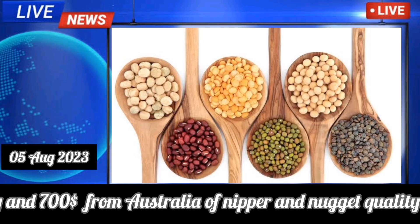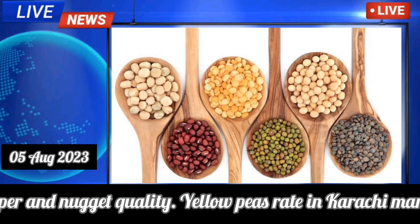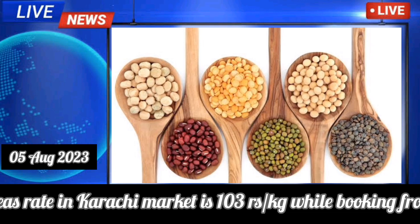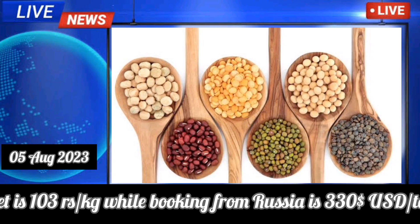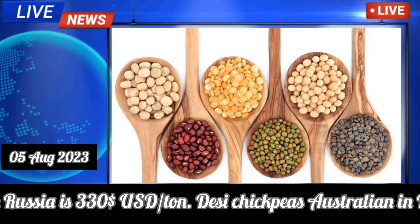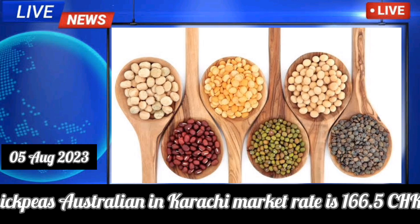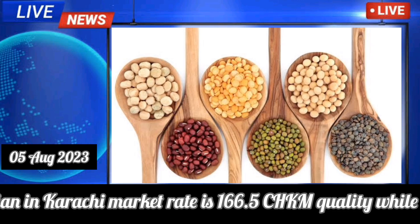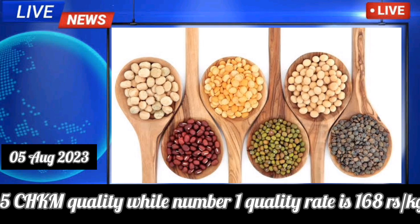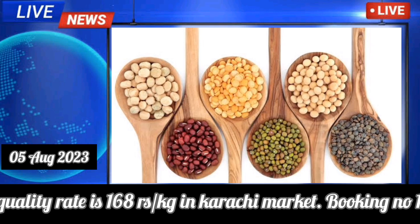Yellow peas rate in Karachi market is 103 rupees per kilogram, while booking from Russia is 330 USD per ton. AC chickpeas Australian in Karachi market: Ch Cam quality is 166 to 166.5 rupees per kilogram, while number one quality is 168 rupees per kilogram.